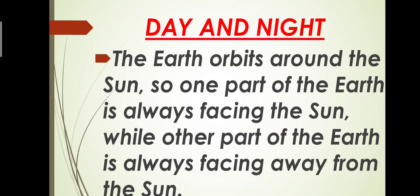When the earth orbits around the sun, it spins around the sun. So one part of the earth is always facing the sun and the other part of the earth is away from the sun. That side of the earth which faces the sun has daytime, and the other side which is away from the sun is in dark, so it has nighttime.